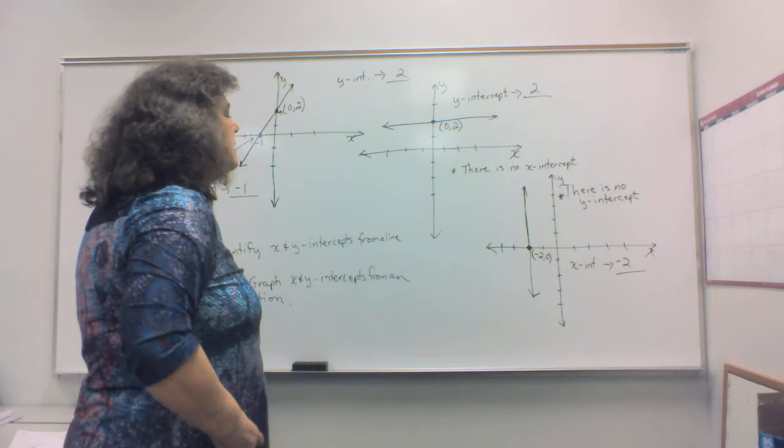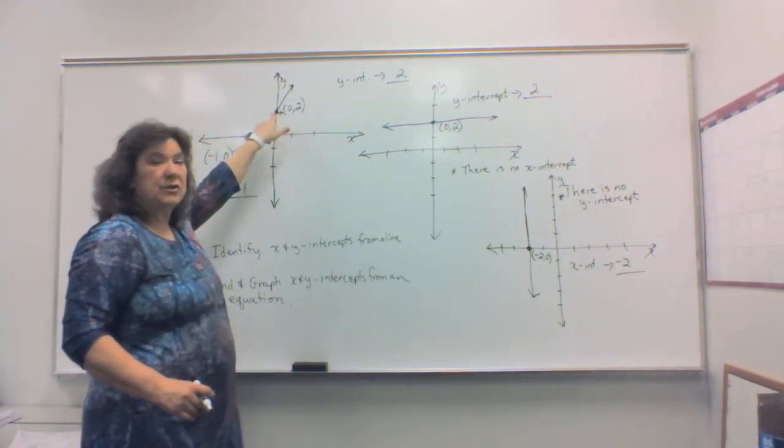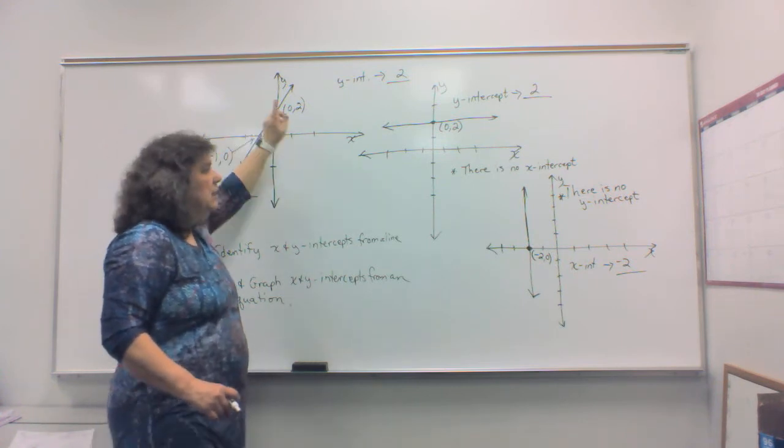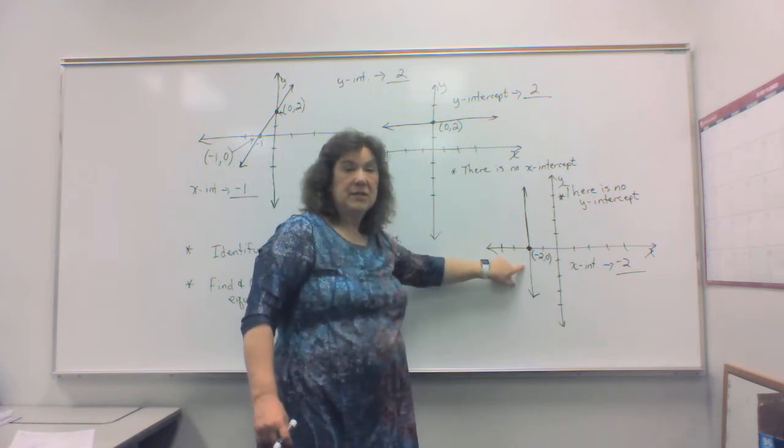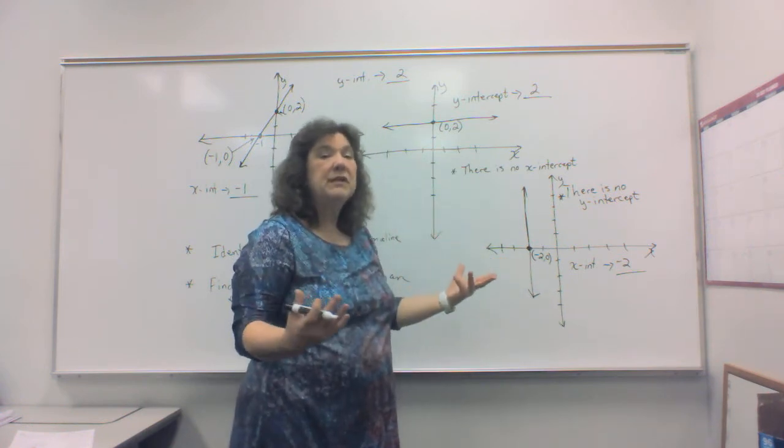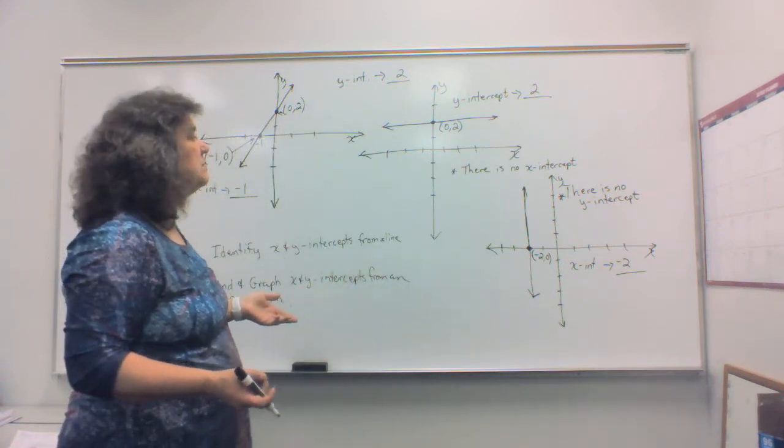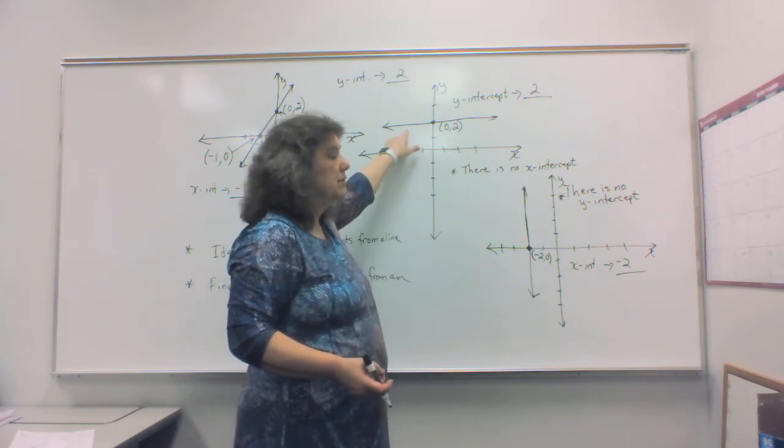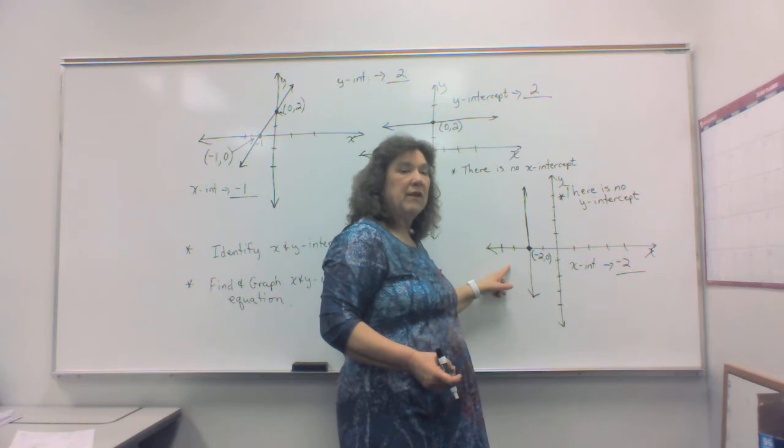And so you can see that you have x-intercept and y-intercept where your line crosses both the x and the y-axis. You'll have y-intercept only, or possibly x-intercept only. So we have three different possibilities when we're talking about x and y-intercepts. Notice, with a y-intercept only, you have a horizontal line. Where you have an x-intercept only, you have a vertical line.